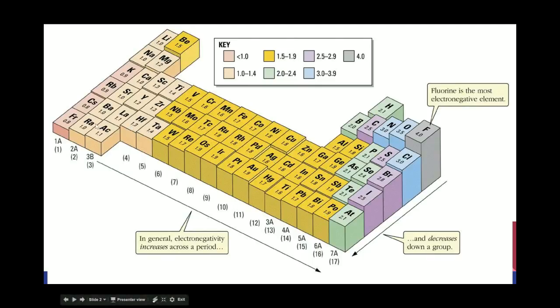And then, of course, way down here in the lower left, you have francium, cesium, rubidium, and so on. These guys have very, very low electronegativities.